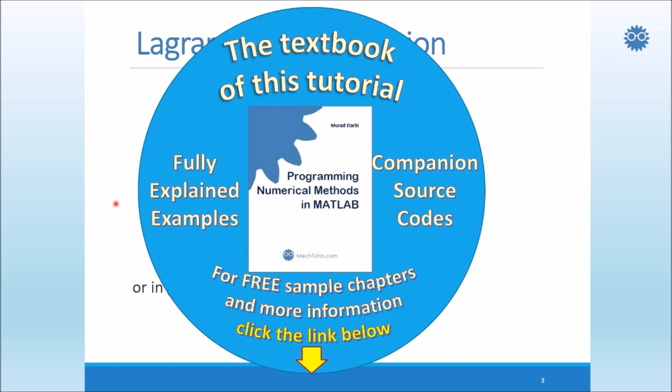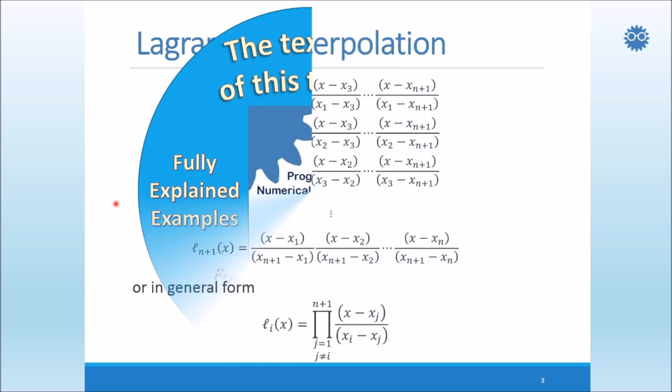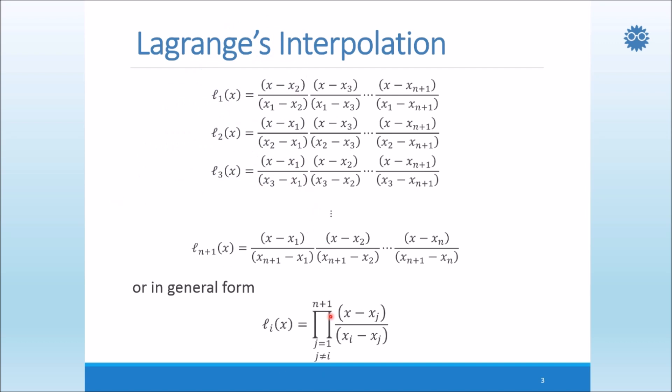Now we can write this product in a concise way, as you see here as a product, where li of x will equal the product or multiplication of those terms, of j equals 1 to n plus 1, and x minus xj over xi minus xj, where j is not equal to i. So this is the second form or second component of Lagrange's interpolation.